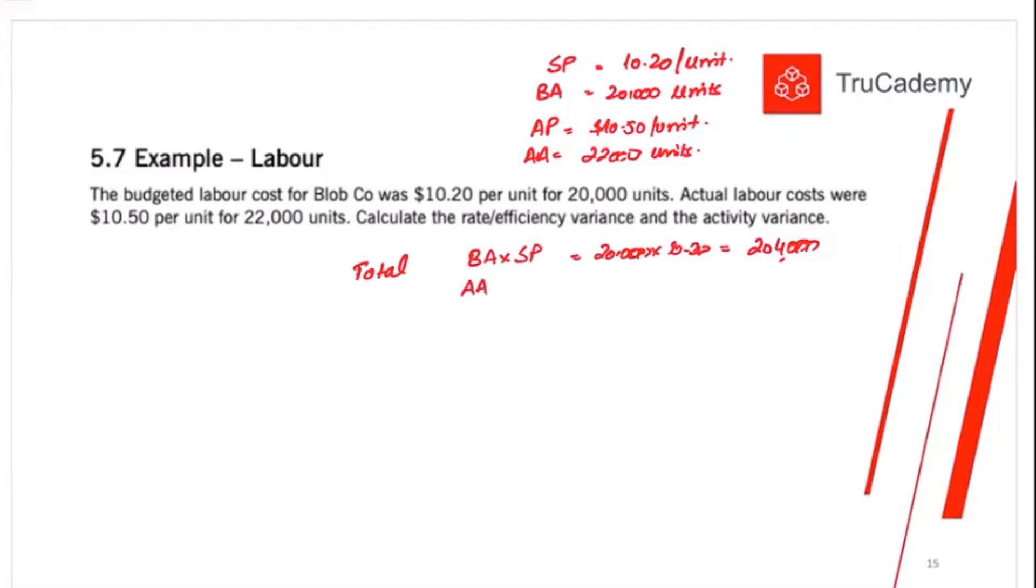Then actual activity into actual price. Actual activity is 22,000 units. And this is 10.50. So 22,000 into 10.50. This will be 231,000.